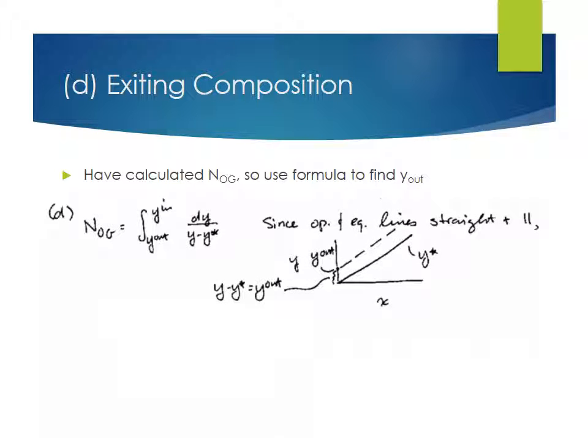So the hint gives us a way of evaluating this integral. So if we look at the operating line in the equilibrium line, they are straight and parallel. So what that means is that if I look at the equilibrium line, it's this line here, that's the value of Y star. And at any point in this column, the operating line is a straight line, which is parallel to that equilibrium line. So the difference between them, Y minus Y star, is always the same. So evaluating that integral is going to be very straightforward. This is only true when the operating line and equilibrium line are parallel to each other.